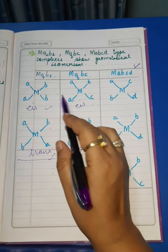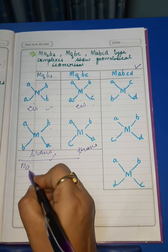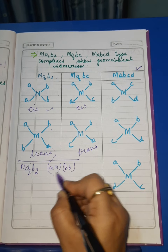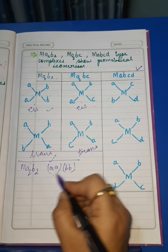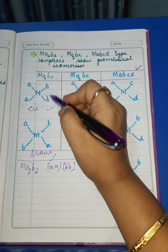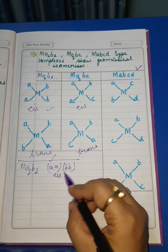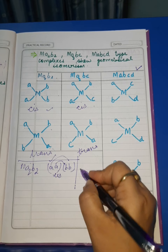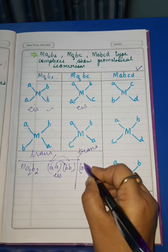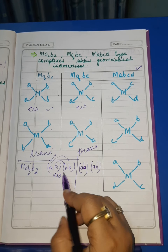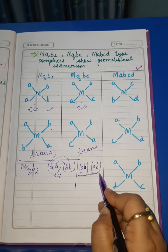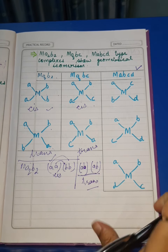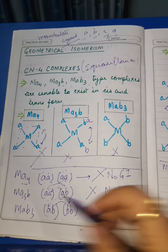For MA2B2, if we make pairs, we get AA and BB — this is one geometry, which corresponds to the cis form where two A ligands are on the same side. On exchanging ligands, we get pairs AB and AB, which gives a new geometry corresponding to the trans arrangement. This different kind of pairing was not possible for MA4, MA3B, or MAB3.